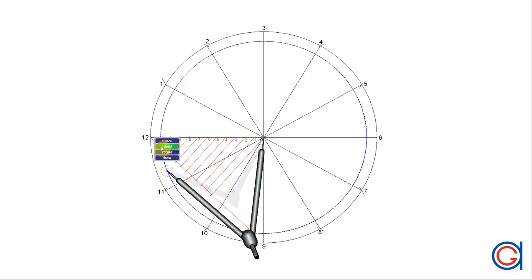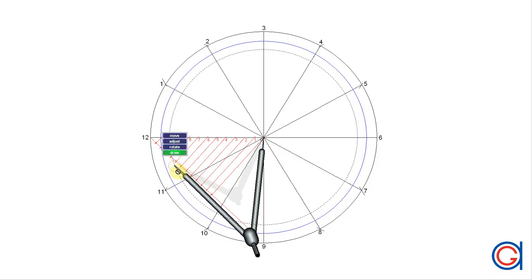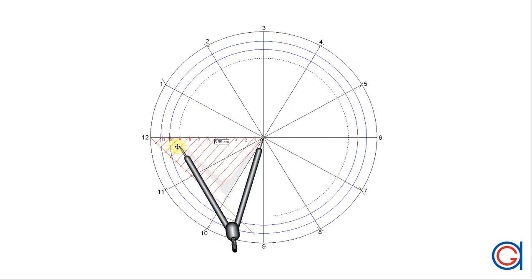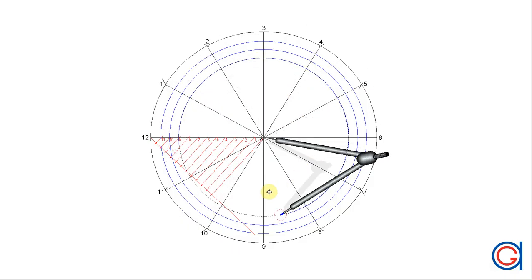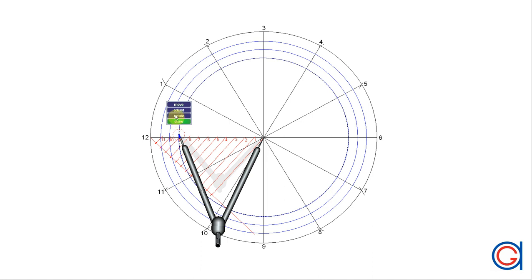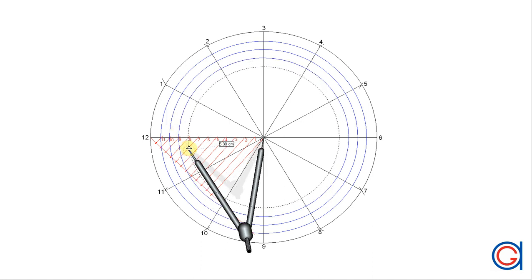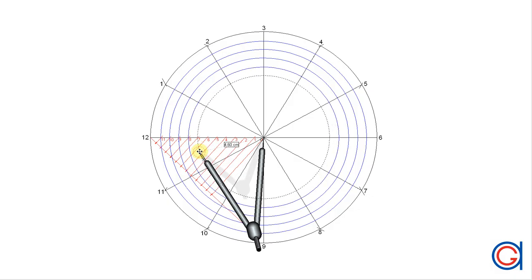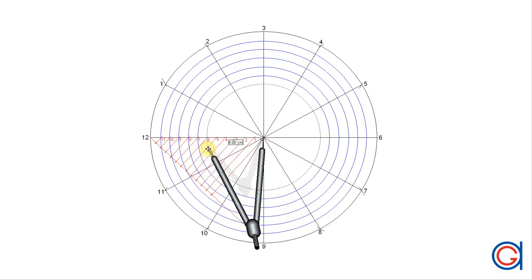So here, our first circle is with radius 0-11. Our second circle has radius 0-10. And so on, until we have completed 11 internal blue circles. Here's our 7th circle, with radius 0-7. And so on, our sixth with radius 0-6.